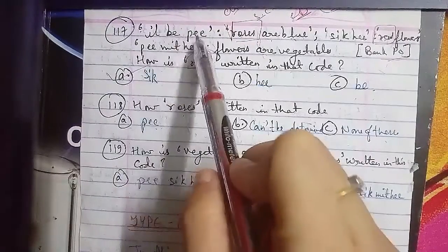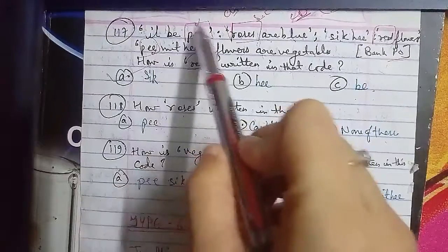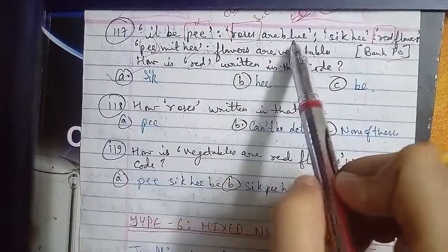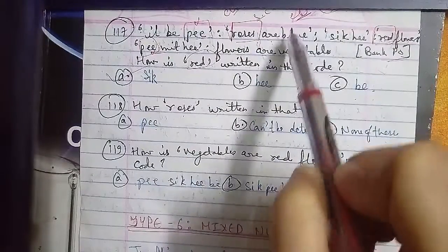We can find are further. Are appears in these sentences, which means are is p. So if we don't have any coding for blue, we can't determine if roses will be il or b.